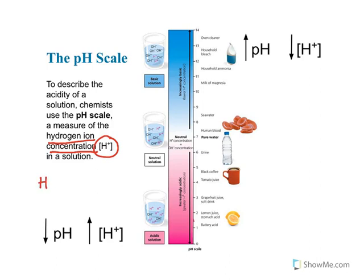acids donate hydrogen ions. So the more hydrogen ions there are, as shown in the bottom of this image, the more acidic the solution is, which means a low pH.